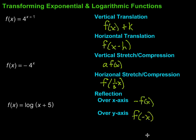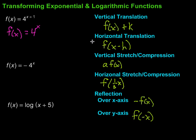Let's take a look at some of these in action. For this first one, we might be asked what transformations have been applied. The parent function is f(x) = 4^x. Notice the difference: to get from the parent function to this function, the exponent has had 1 added to it. There seems to be some sort of translation, but is it horizontal or vertical?